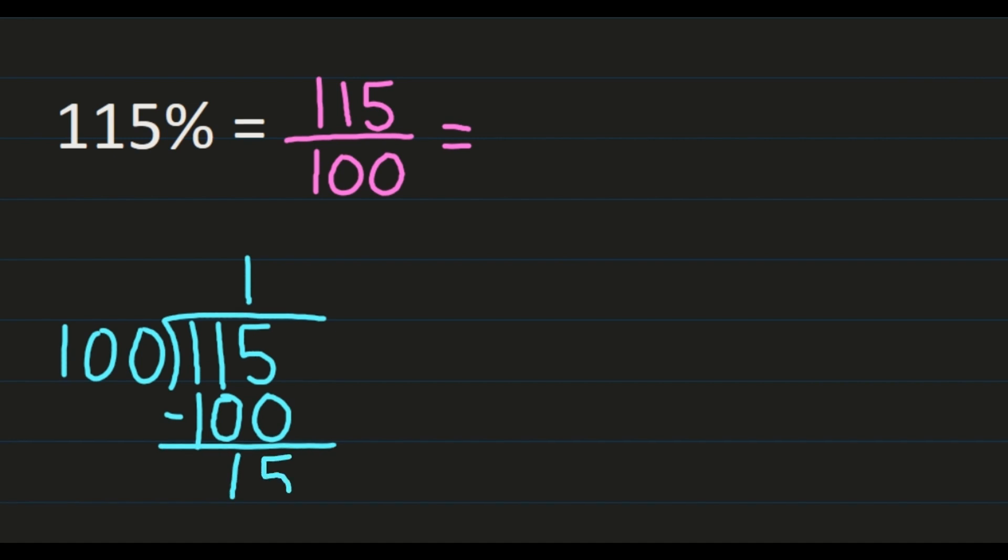And my quotient becomes my whole number, so the 1 will become my whole number. My remainder of 15 becomes my numerator, and my denominator remains the same. So 15 will be my numerator, my denominator of 100 will remain the same.